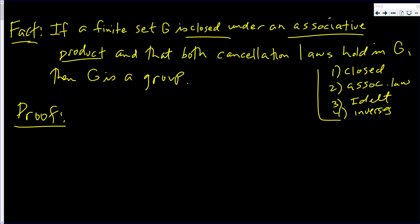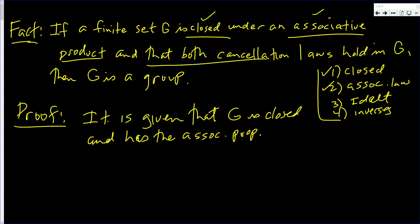Okay, so they gave us closed and associative. It is given that G is closed under multiplication and has the associative property. So we have to show that it has an identity element and that it has inverses. And the only other thing that we can use is that this special G has the cancellation law. And it's closed.